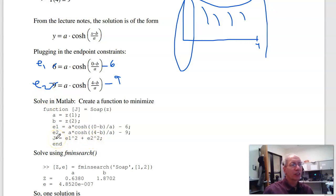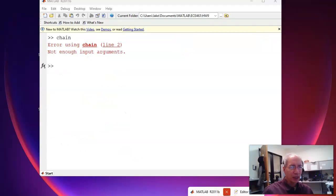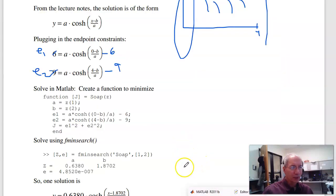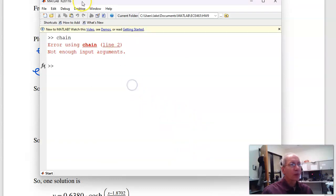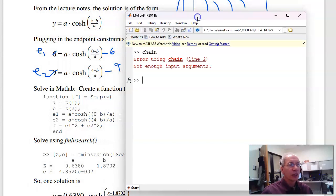Find a and b to make e1 and e2 zero. Or squaring them, find a and b to minimize j. That's the function fminsearch. fminsearch will find the minimum of a function. So once I set this up in MATLAB, I can sit there and guess. This is called soap. I'm going to say what is soap(1,2)? It's not 0. That's my j, the sum squared error.